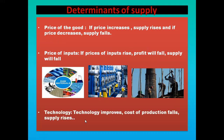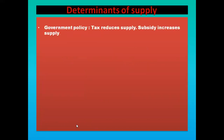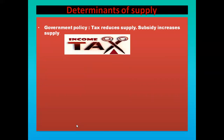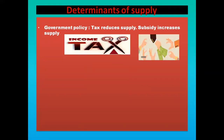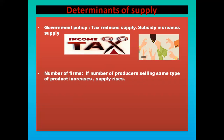Next is technology. If there is an improvement in technology, the cost of production will fall, and if the cost of production falls, the supply will rise. Next is government policy — taxes reduce supply and subsidies increase supply. If the government imposes taxes, there will be an increase in the cost of production and producers will tend to supply less. If the government gives subsidy to the producers, there will be a decrease in the cost of production and supply will increase.